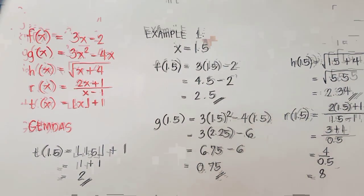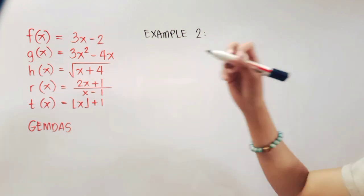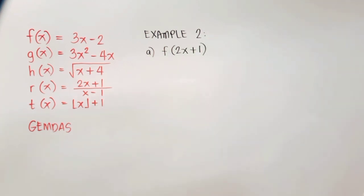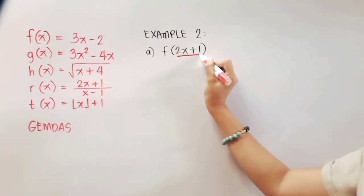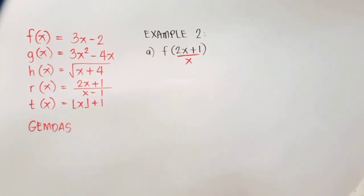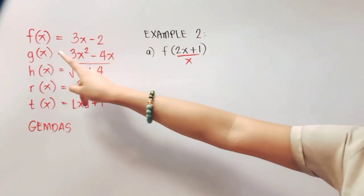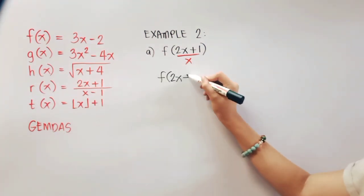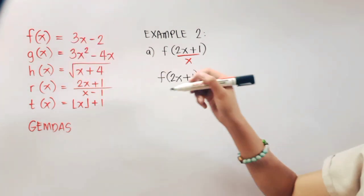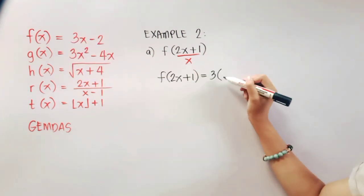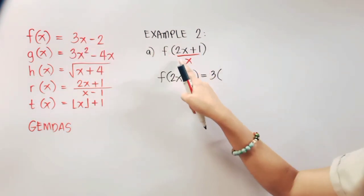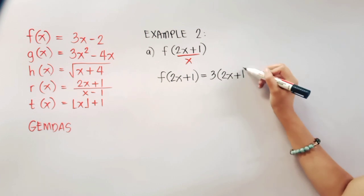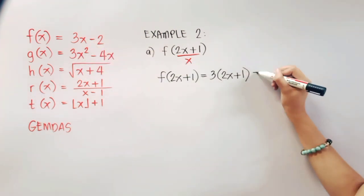Let us now proceed to example 2. Letter A is f of 2x plus 1. In this case, 2x plus 1 is our x. Now this will be what we will substitute to the function f. So rewriting that one, f of 2x plus 1 is equal to copy 3, and then x here will be substituted by the entire value here. So that's 2x plus 1, and then copy minus 2.